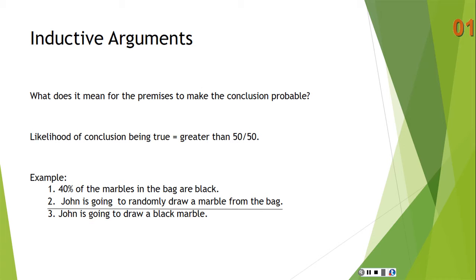Here is an example of an inductive argument. Premise 1: 40% of the marbles in the bag are black. Premise 2: John is going to randomly draw a marble from the bag. Conclusion: John is going to draw a black marble. This is not a good inductive argument because the likelihood that the conclusion is true, given true premises, is less than 50-50 — in fact, the likelihood is 40-60.